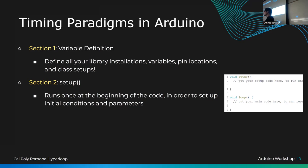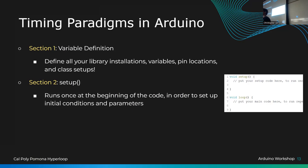If you have an RC car and want it not to move when you first program it, you need to set that in the setup function. Otherwise it will have some default initial condition and race off into a wall. So in your skeleton code, make sure you set all motors to zero — meaning they don't move — at the beginning of the script.